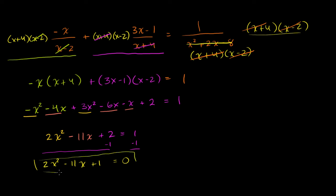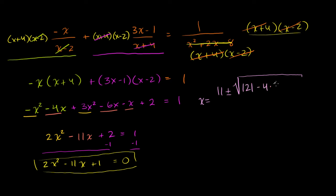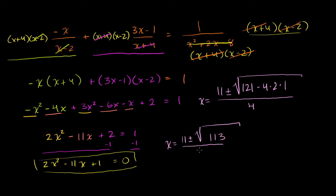This is now a standard quadratic equation. Using the quadratic formula, x equals negative b — b is negative 11, so negative negative 11 is positive 11 — plus or minus the square root of b squared, which is 121, minus 4 times a (which is 2) times c (which is 1), all over 2 times a, which is 4. That gives x equals 11 plus or minus the square root of 121 minus 8, which is the square root of 113, all over 4.